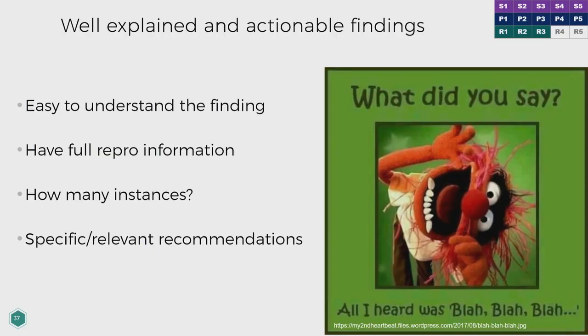Business impact should be front and center in the executive summary — that's what customers and managers are interested in. Make sure you've discussed it with the testers up front so they understand the real risk. For example, maybe the data inside the application isn't very sensitive, but if someone compromises it and gets access to the server, they could reach something else that is sensitive — the business impact has to reflect that. Findings need to be understandable and actionable, with full reproduction information: step by step what the tester did, how it manifests, ideally as an attack scenario. Even better, use that to create a unit test in your CI system so regressions get caught automatically.